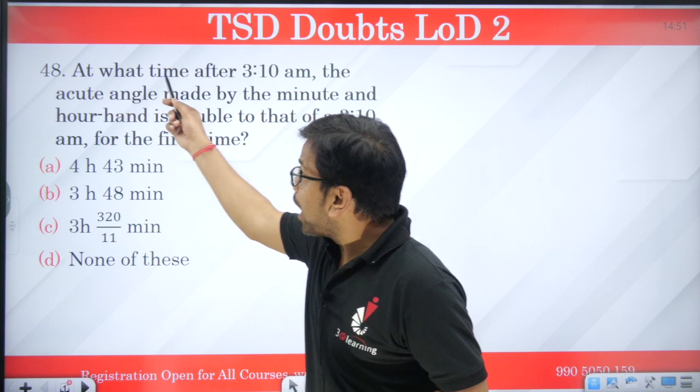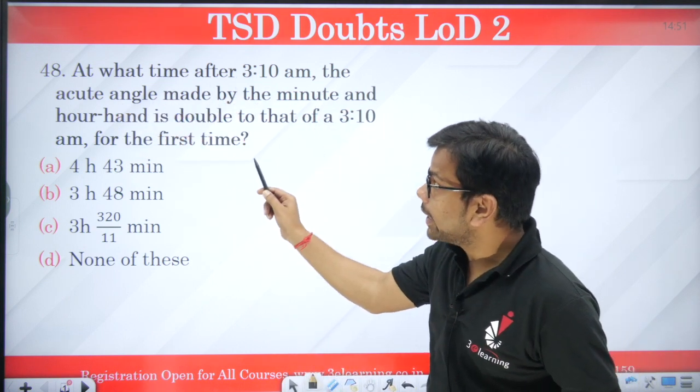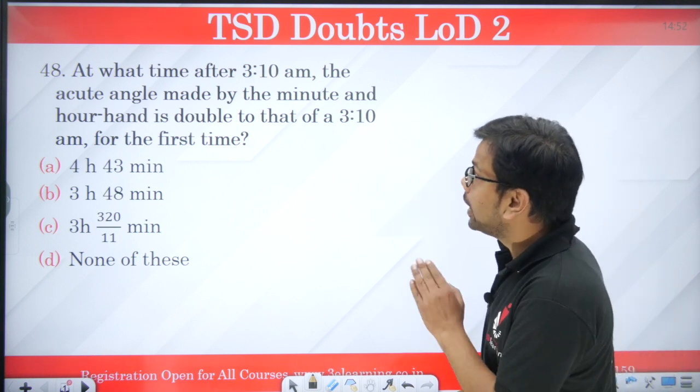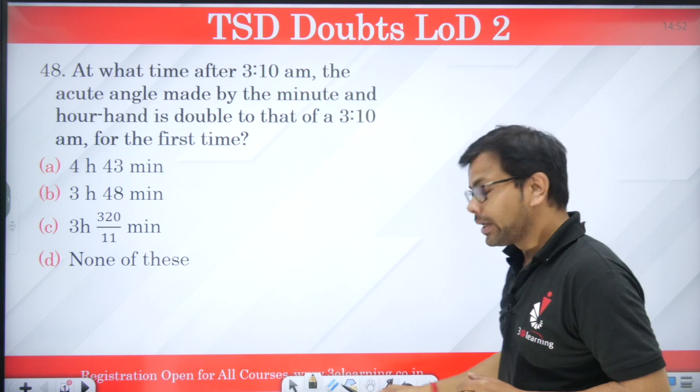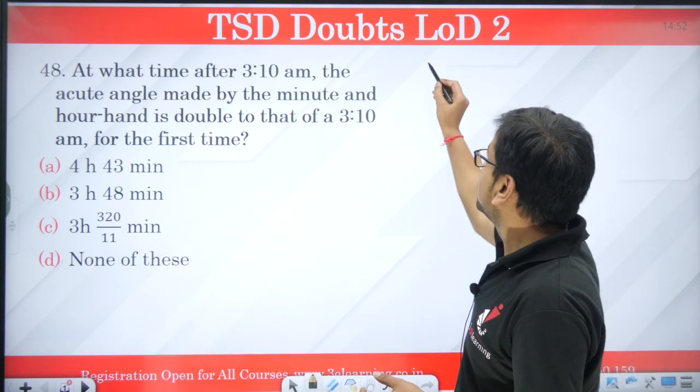The question is: At what time after 3:10 am, the acute angle made by the minute and hour hand is double to that of 3:10 am for the first time? What would be the acute angle at 3:10?